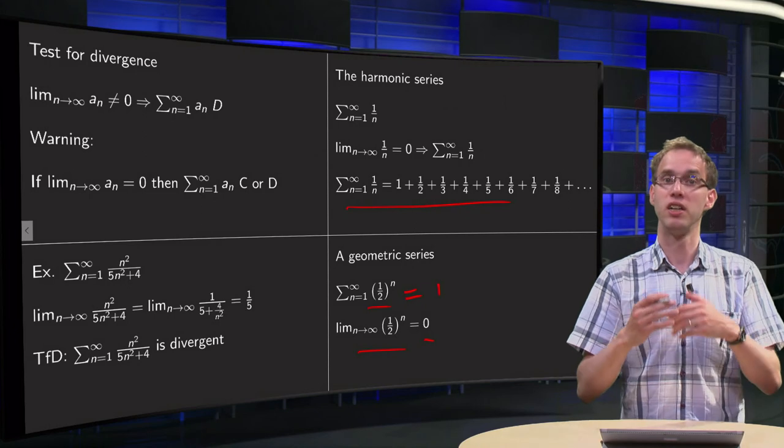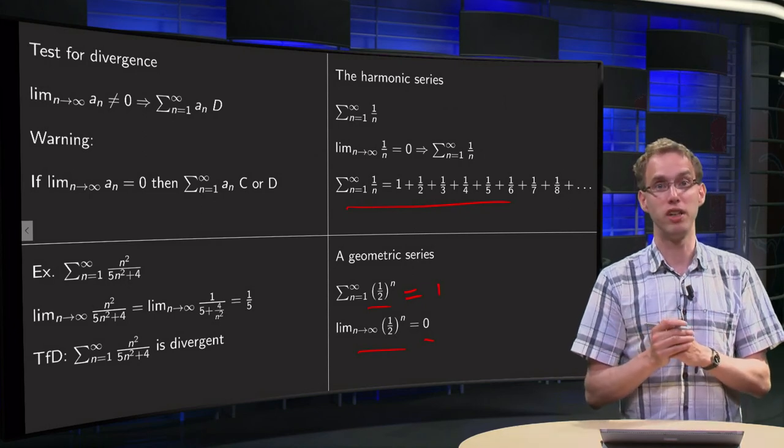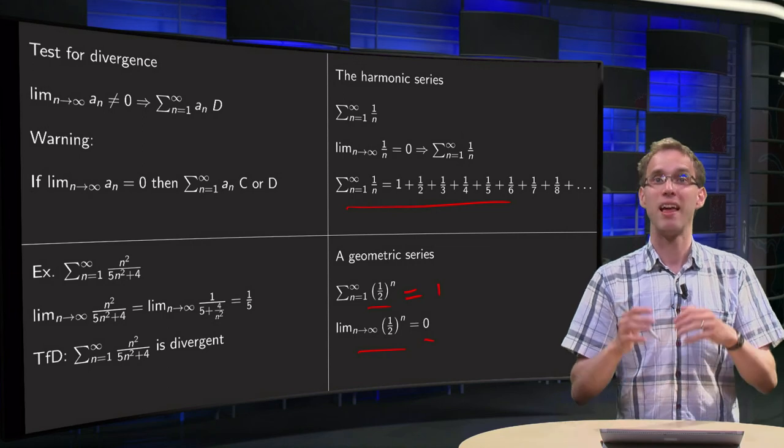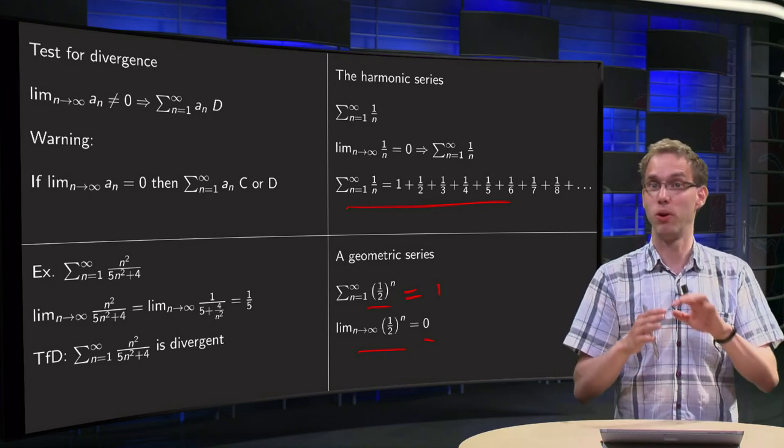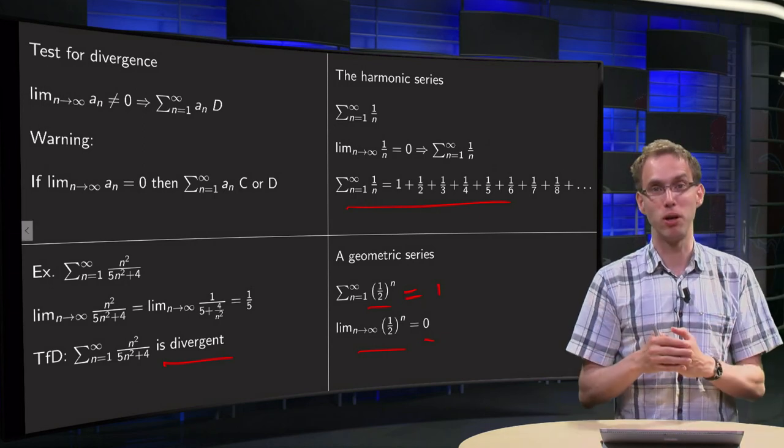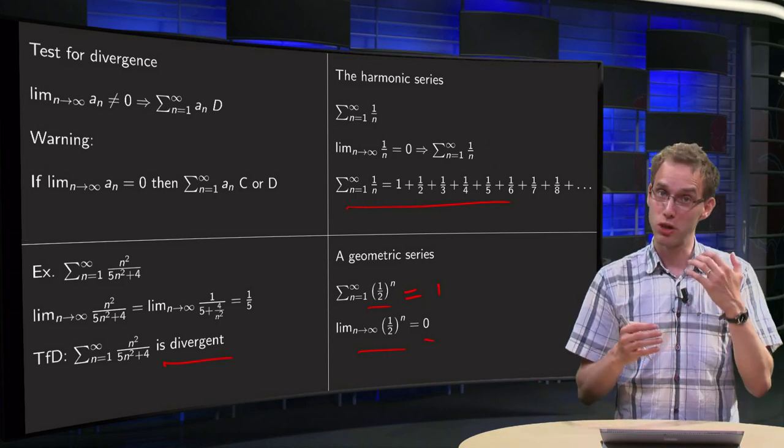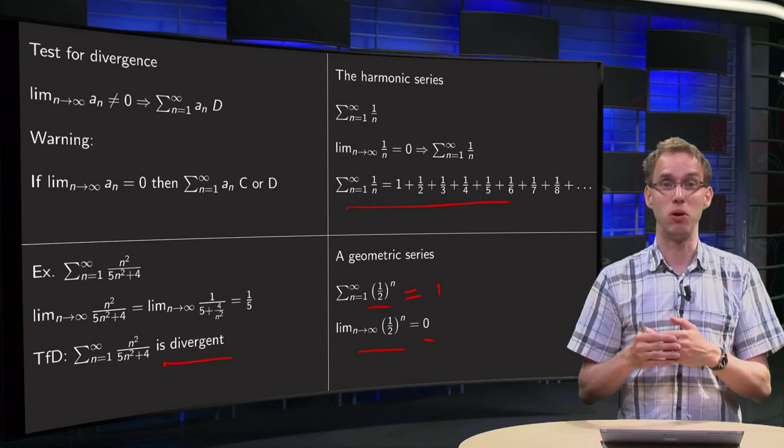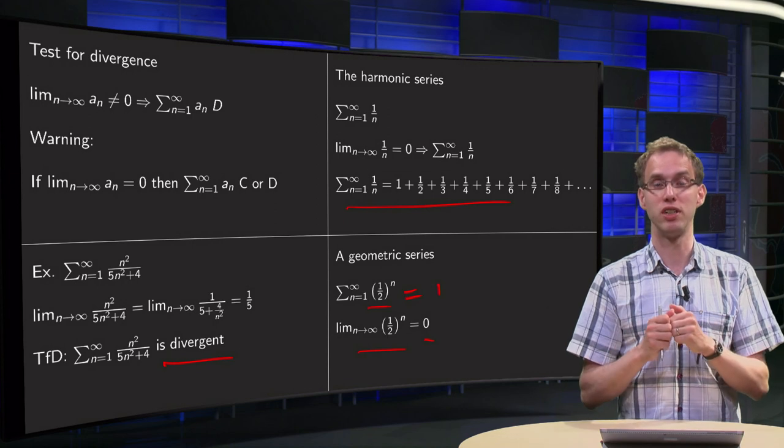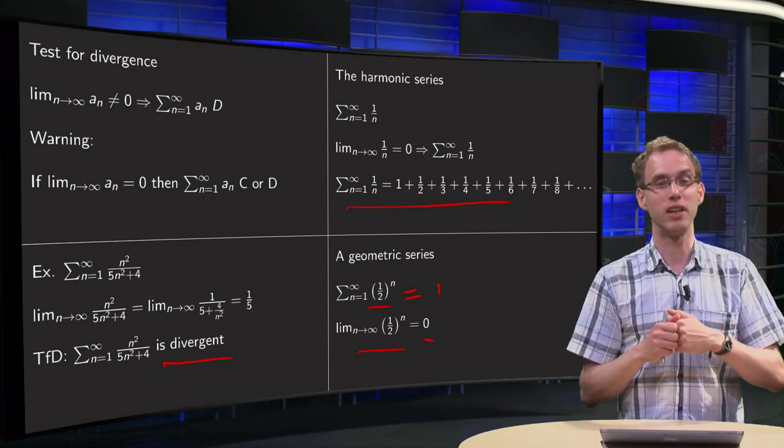In the harmonic series, terms tend to zero and the series diverges, so that is the danger of the test for divergence. If the terms do not tend to zero, you are happy and you have divergence. If your terms tend to zero, which is often the case, then you don't know what is going on. You can have either convergent or divergent series, so in that case you will have to use other tests.